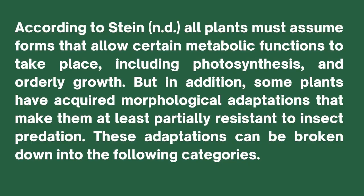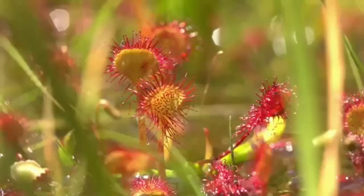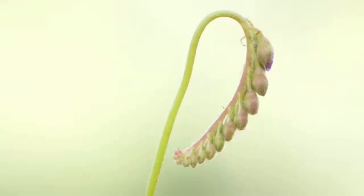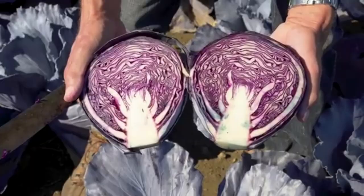Some plants have adapted to their areas and developed partial resistance against insect predation. Under the morphological category, the first adaptation is color — some plants have developed colors that make them unattractive to insects, helping them avoid insect attack. The second is anatomical adaptation, where plants have built resistance due to where they are planted or due to high adaptability across different locations.